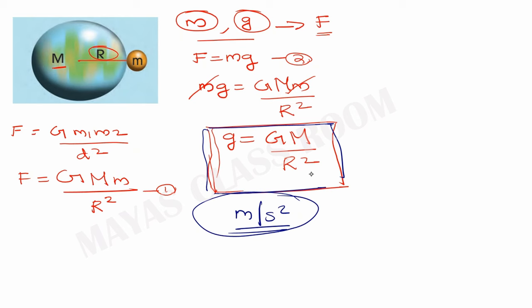Where do you think the mass of the object depends in this equation? This equation does not contain the mass of the object. It is not the mass of the falling object. Acceleration due to gravity is independent of the mass of the object.